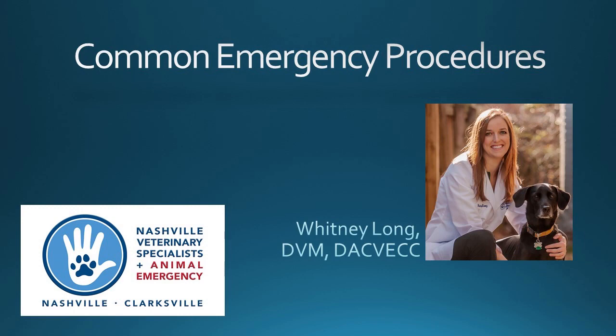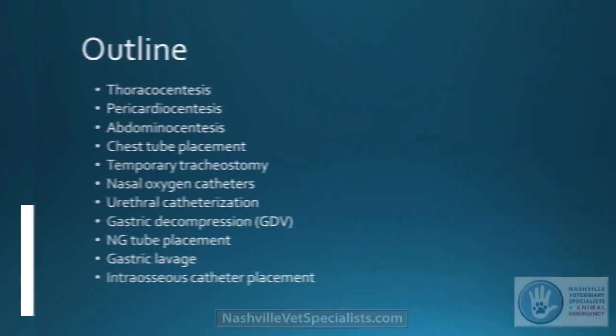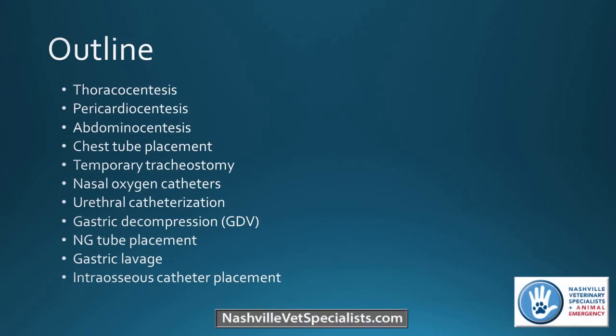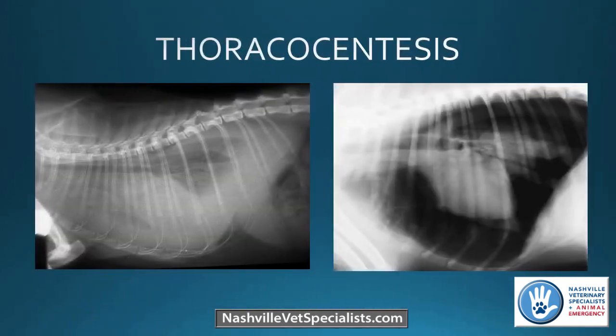I'm going to talk about common emergency procedures. This is an outline of different procedures we're going to cover. I'll go through each procedure, give you an idea of how a patient might present that would need any of these procedures, and then go through the procedure itself, any complications, tips and tricks, things like that. The first one is a thoracocentesis.